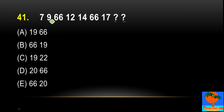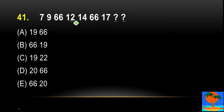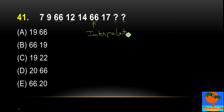If we talk about the pattern, what kind of pattern is showing? You can see 7, 9, then 66 — a very big value, a very abrupt change, then 12, then 14, then 66 again. So what I can see is that 66 is basically an interpolation. So here, interpolation chances are the most important.